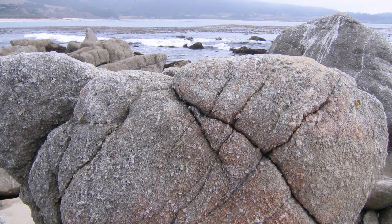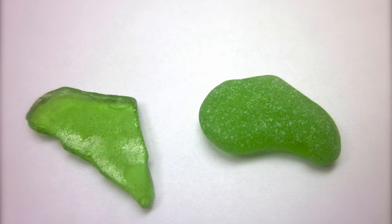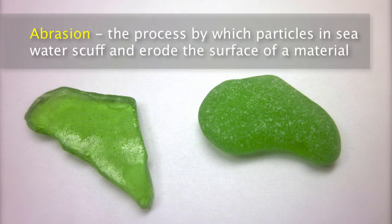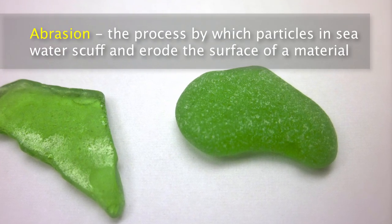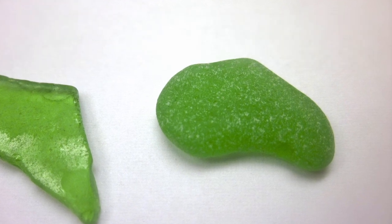Coastal erosion usually starts with the chemical and physical breakdown of exposed rock by wind and waves. There's a real chemical reaction going on in the cracks and minerals. Sea glass is a great example of how ocean water can erode a surface over time through abrasion. Abrasion is really just like sandblasting — it's the process by which fine particles in the seawater are constantly scuffing and roughing up the surface of a material. Through all the tumbling the sea glass does in the surf, you're going to see more rounded pieces of glass with less transparency.